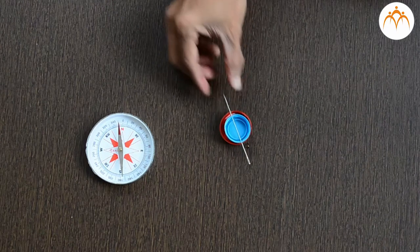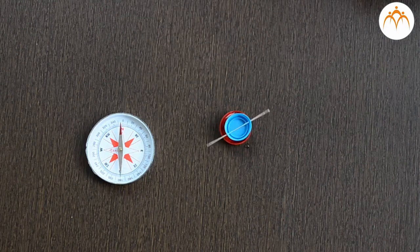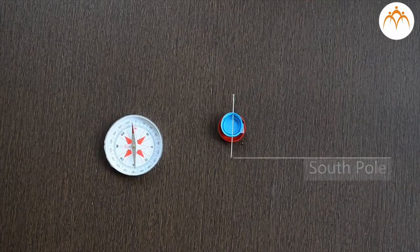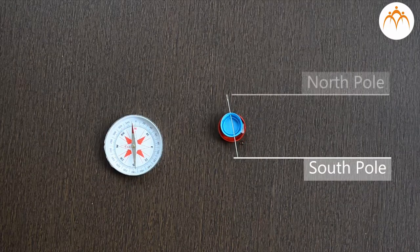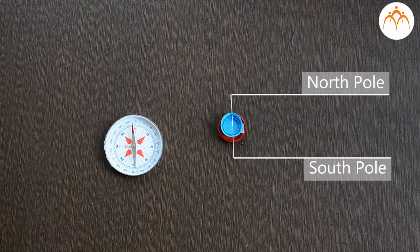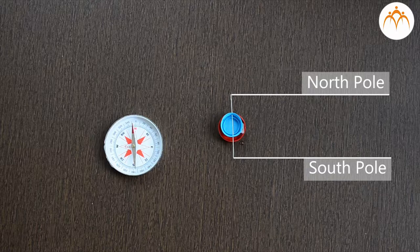Place this cap on water in a plastic container and then it aligns itself in the north-south direction. This pointed end of the needle is the south pole and the eye of the needle is north. Place this container at various locations and verify the direction yourself.